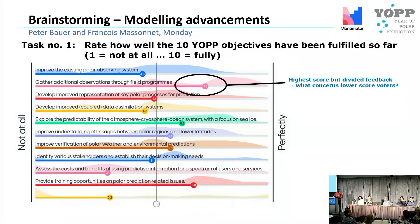We have these probability density functions for each of the answers, with a couple of interesting features that were robust across many brainstorming groups. The objective that got the best answer was the additional observation through dedicated field programs, though there is a bimodal distribution — a bulk around 8-9 and another bulk around 5 or 6 — for reasons that are not entirely clear.